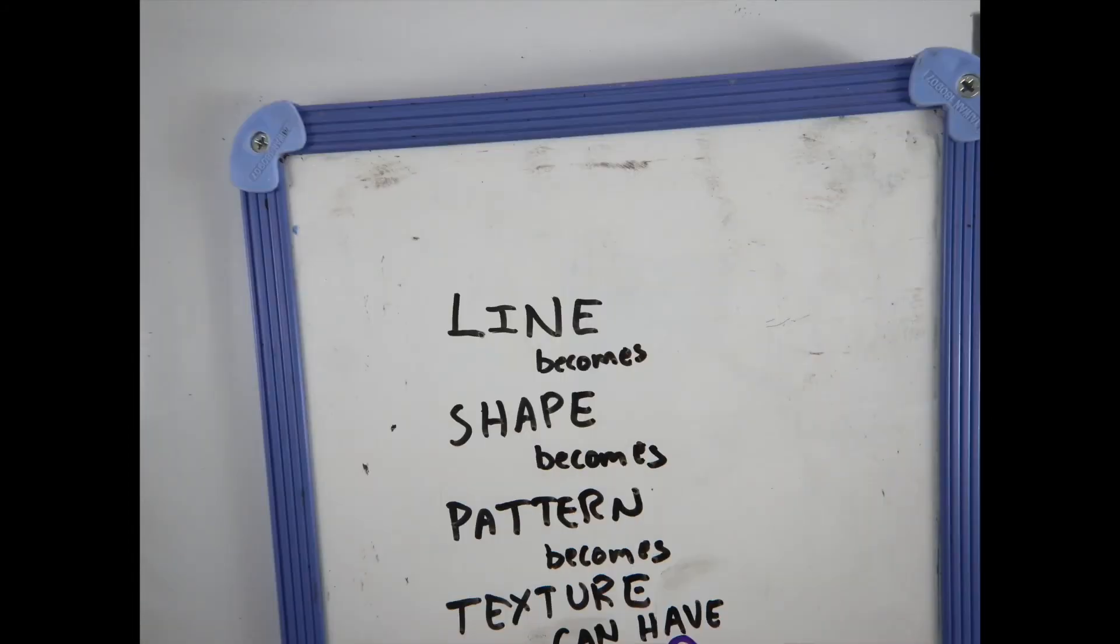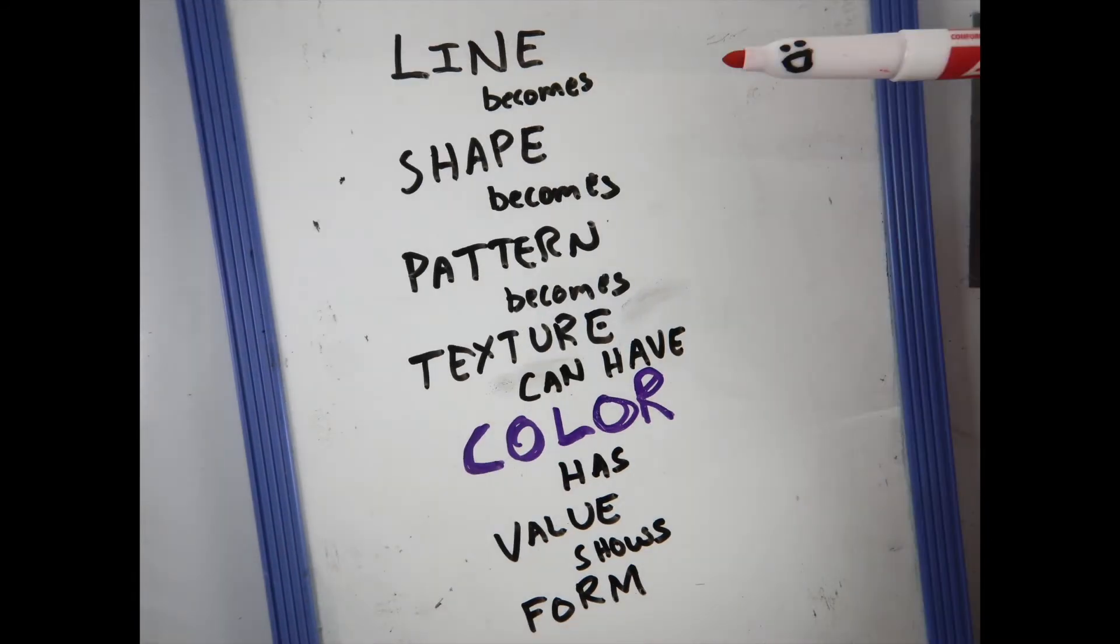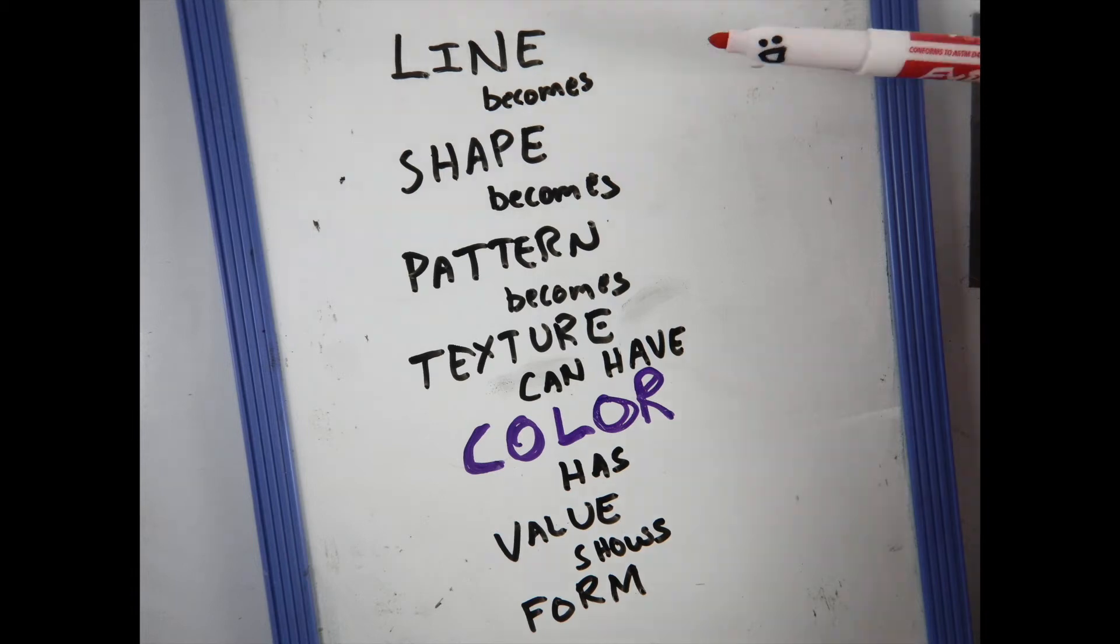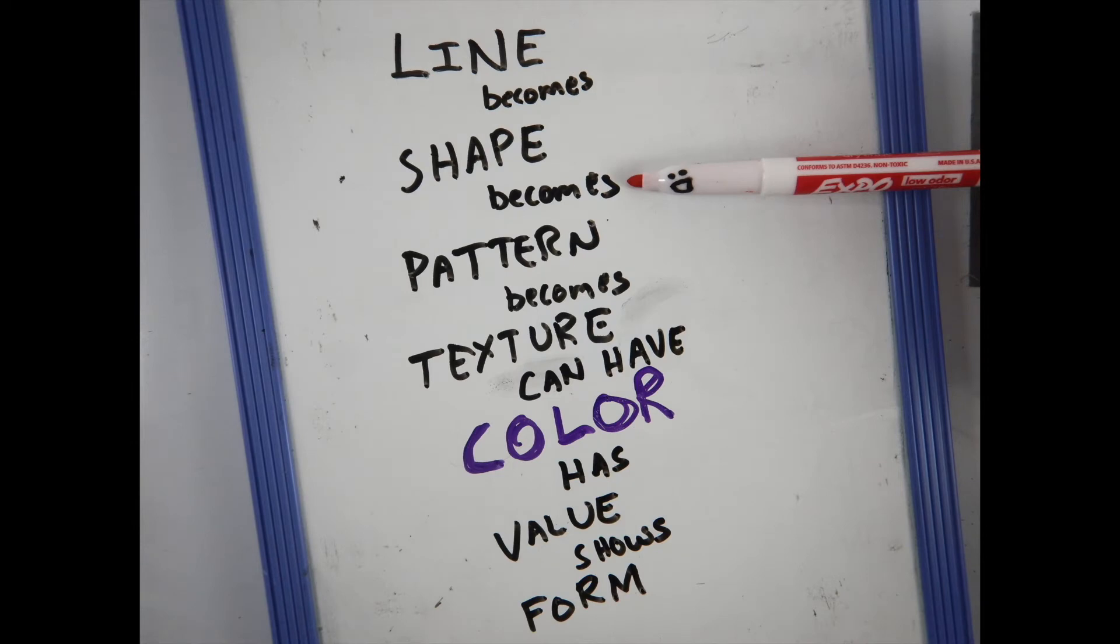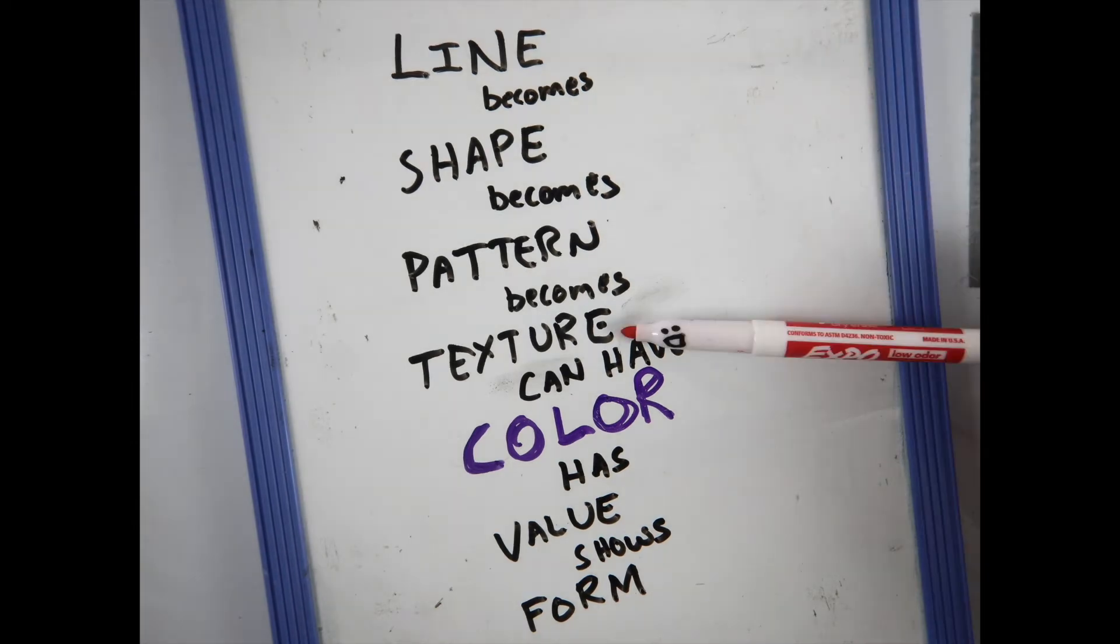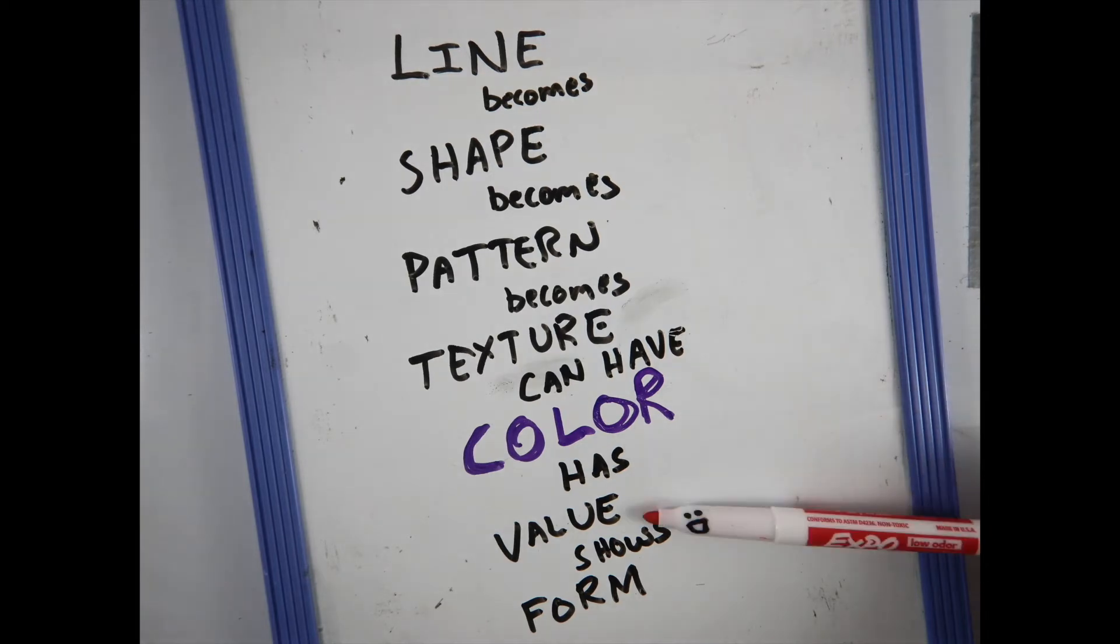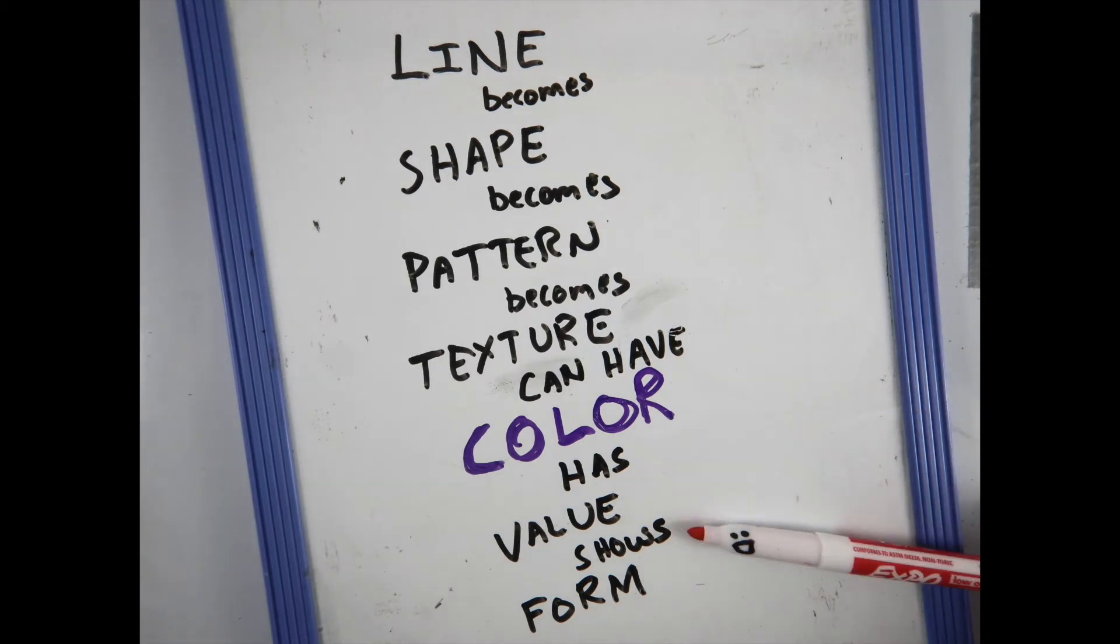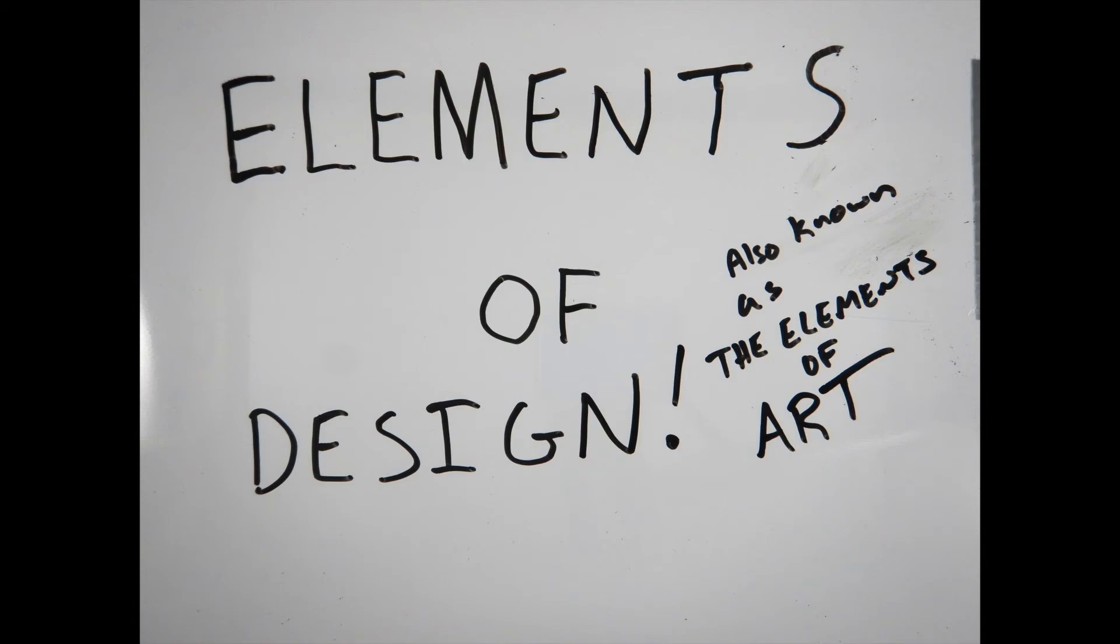And you know what? Let's have red marker come back up here. Come on up, red marker. All right, sing it with me. Lines become shape. Shape becomes pattern. Pattern becomes texture. And texture can have color. Color has value, and value shows form. These are the elements of art. Actually, kids, let's just remember the term, not the song.